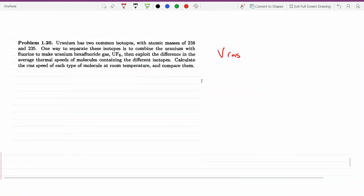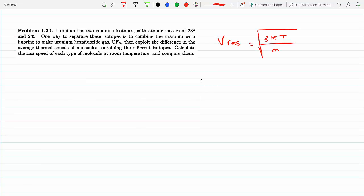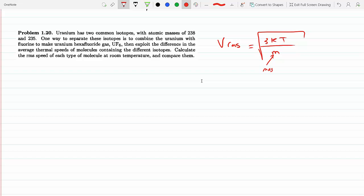We know that V_RMS is equal to the square root of 3KT over M. M is, if you remember from the derivation of V_RMS, they started with one atom in a piston and then applied Newton's second law. So this would be the mass of one molecule per the derivation of this formula.